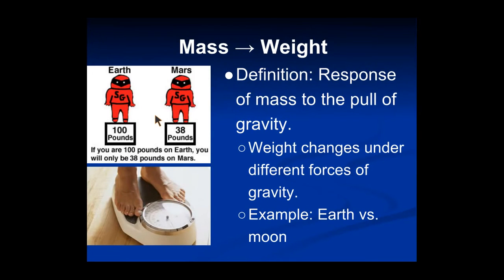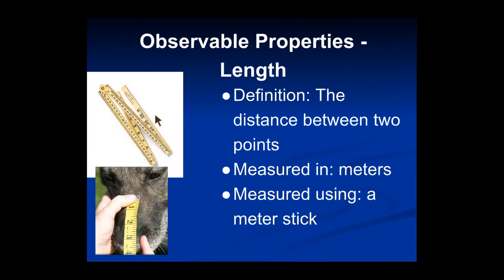Next thing we're going to talk about is length. Length is very straightforward. It's the distance between two points. In science class, we'll use meters as our unit to measure the length between two points. When we want to measure the length, we'll use a meter stick. We'll also be using rulers to measure length. Always be sure to use the side of the ruler with the metric system on it and not the side with the inches.